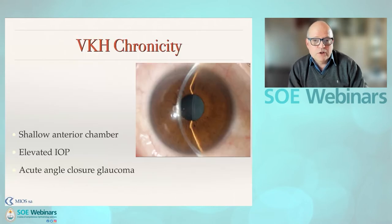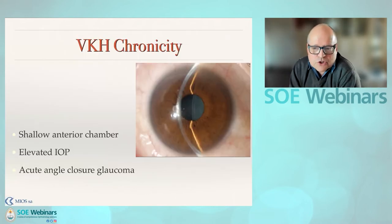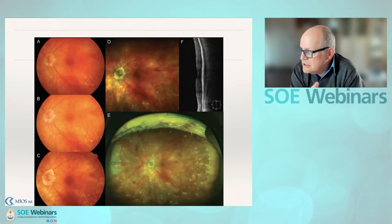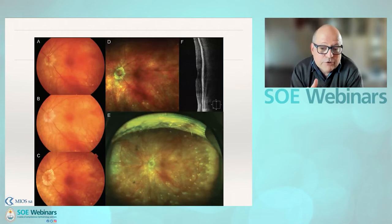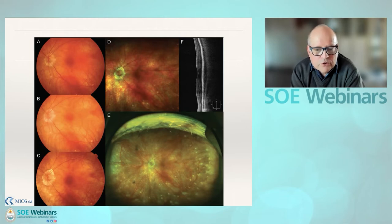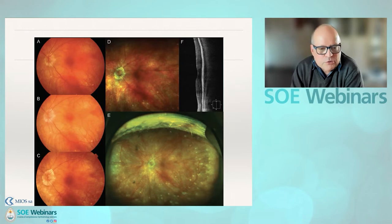Chronicity in VKH leads to shallow anterior chamber, increased pressure, and acute glaucoma. The most important manifestation is depigmentation — the sunset glow appearance inside the retina — which leads to a severe problem with glare and is often why these patients are virtually blind at the end of their life. In VKH, be extremely aggressive in the beginning. If you start seeing depigmentation beginning peripherally, increase the immunosuppression, because otherwise when these patients reach 60 to 70 years of age they'll be essentially blind.